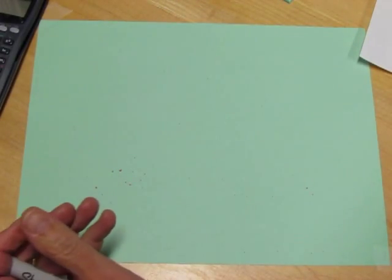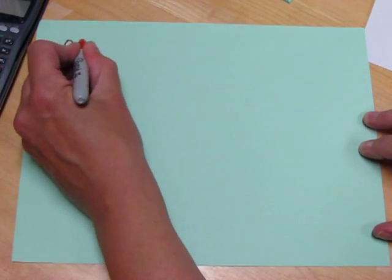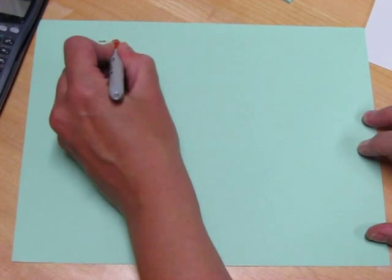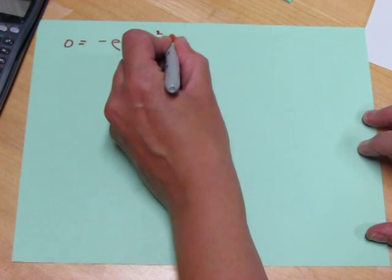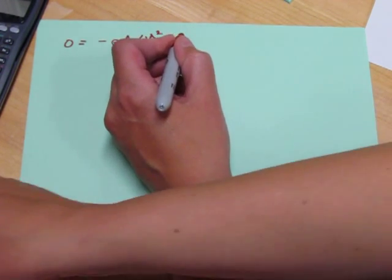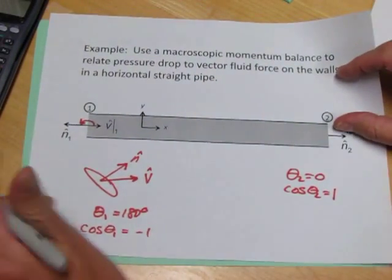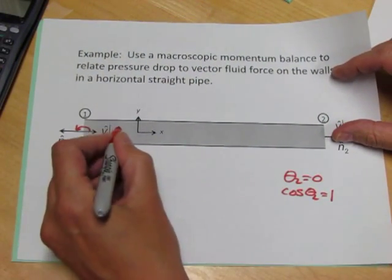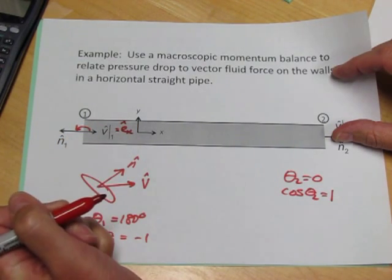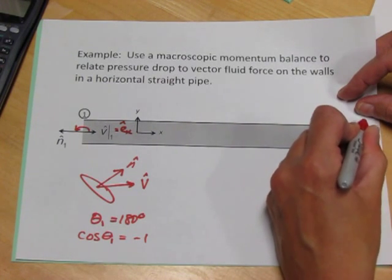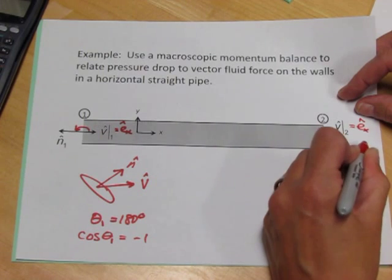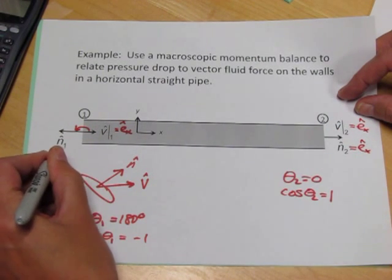If we now copy the macroscopic momentum balance down, filling in what we know, we obtain zero equals, for the inlet, minus rho A V squared times minus one times V hat. V hat one is equal to X. V hat two is also equal to X. N two is equal to X and N one is equal to minus X.